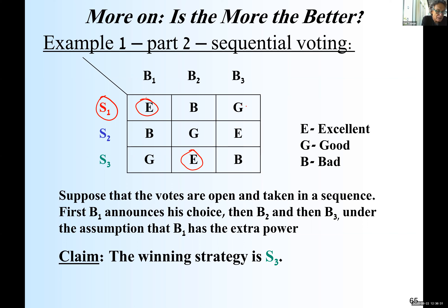Why? Because there's a majority for S1. So it doesn't matter if B3 selects S1 or S2: if he selects S1, there's a majority for S1 — good for him. If he selects S2, no majority, and since B1 selected S1, B2 selected S3, and B3 selected S2 — no majority — the CEO's selection S1 wins. Either way, the result will be S1, which is bad for B2.